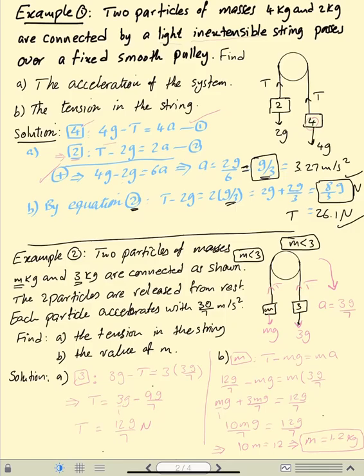Example 2: a system of two particles connected by a string over a pulley — 3 kg and M kg. We are given that M is less than 3, so 3 is heavier. Each particle accelerates at 3G over 7 metres per second squared. If the question gives values in terms of G like this, follow the question and keep answers in the same form. Find the tension in the string and find the value of M.